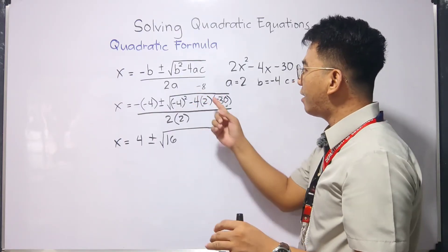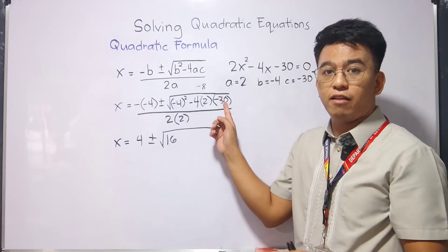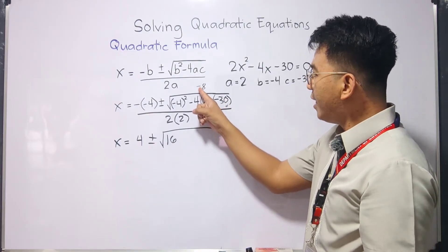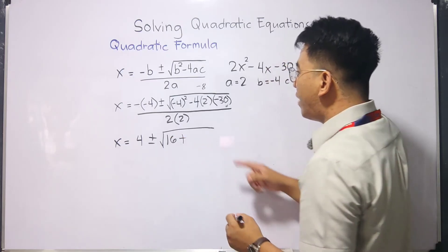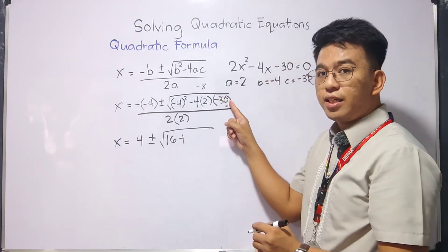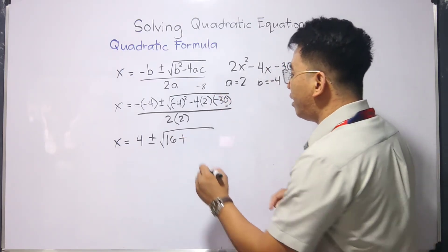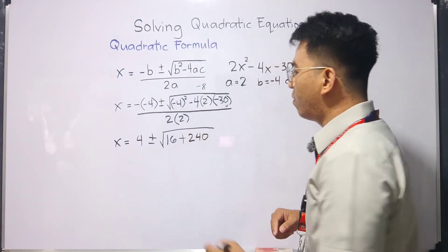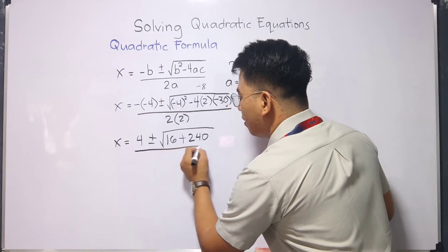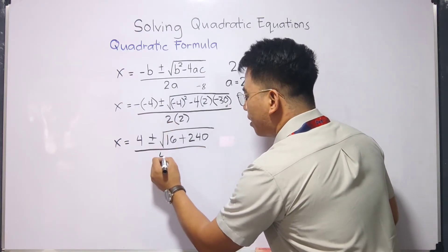Then you will multiply it, this negative 8, by negative 30. Negative times negative is positive. So this is plus. Then you have 8 times 30. 8 times 30, that is 240. Over 2 times 2, which is equal to 4.